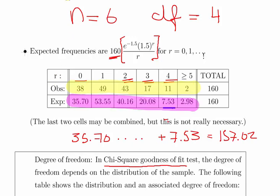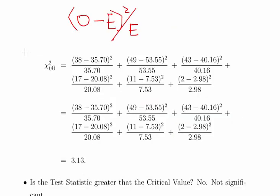So 38 and 35.7, 49 and 53.55, and so on. There's a good bit of calculator work here. Give yourself 10 minutes and you should get a test statistic of 3.13.